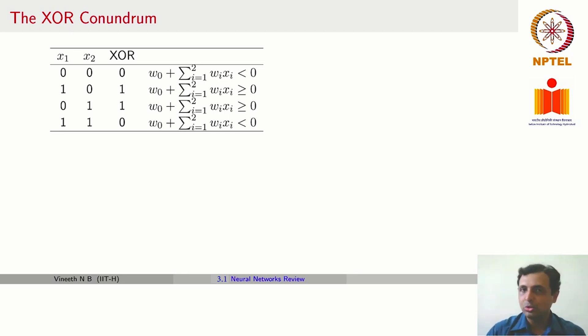We said that although Rosenblatt proposed the perceptron, Minsky and Papert later showed that the perceptron is limited to only certain kinds of data configurations. The example they used was the XOR gate. Let us try to understand that.